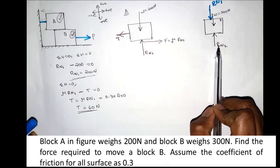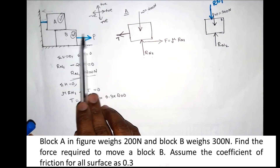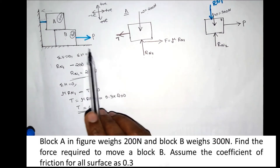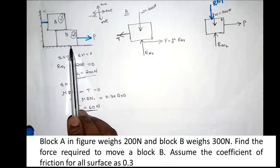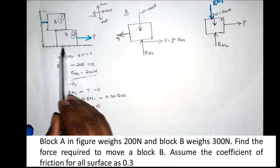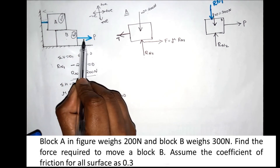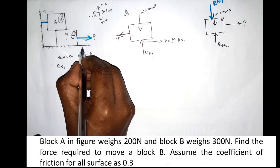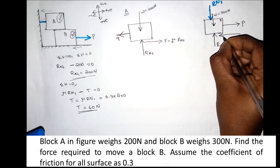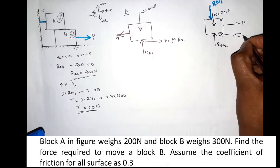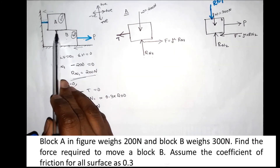We identify the external force on the body — there is a force Pn2 applied to Block B. We also identify the friction force at the contact surface. Since there is a contact surface, there is a friction force. This block tends to move right, so the friction force acts to the left. The friction force equals mu into Rn2.